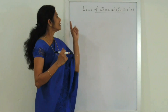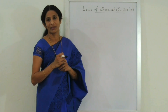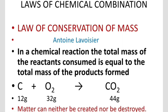The Laws of Chemical Combination govern how elements combine in a chemical reaction. The first law is: the total mass of the reactants consumed is equal to the total mass of the products formed.